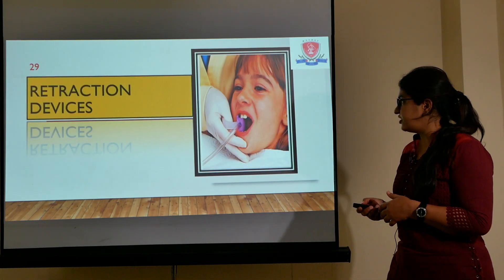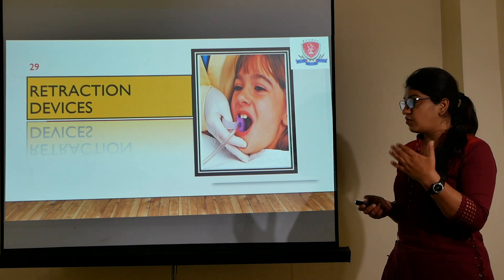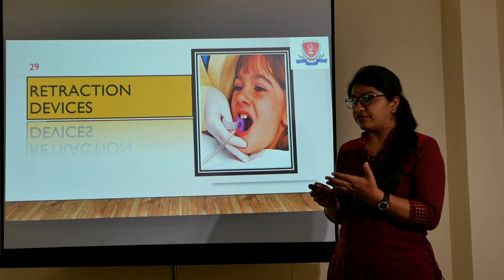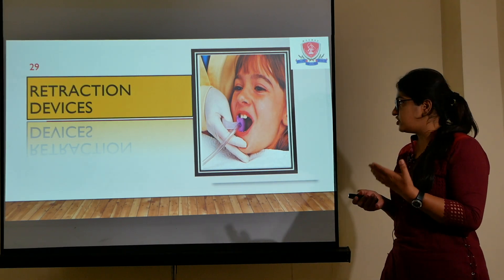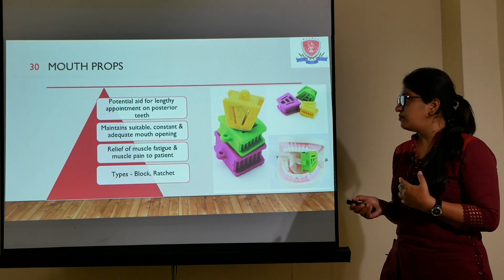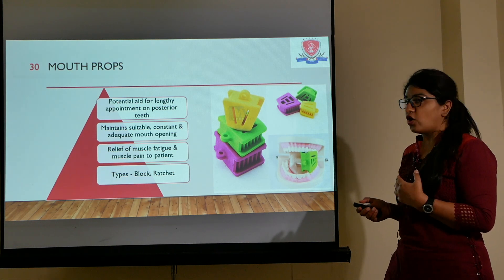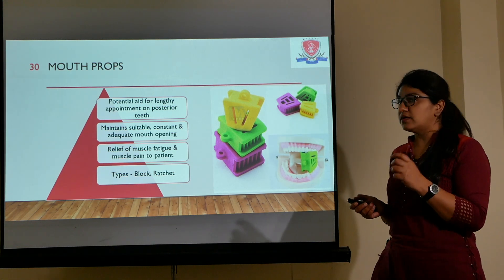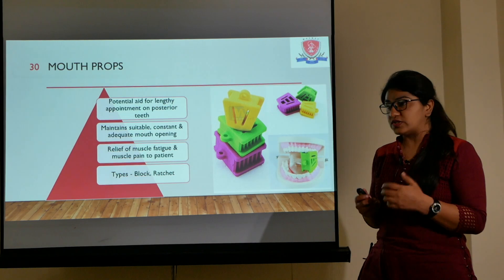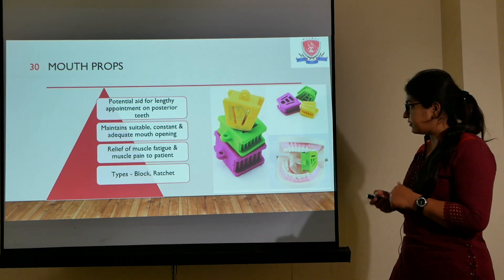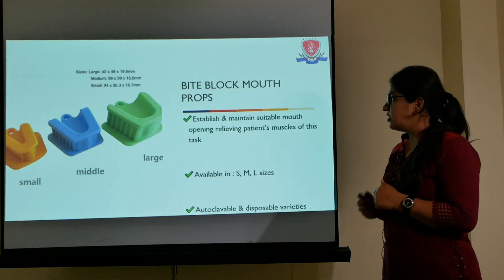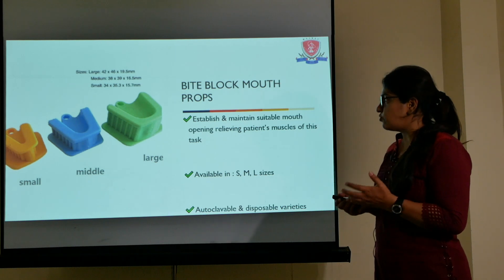Coming to the retraction devices — moisture control has been done, now we have to retract the tissues because they also cause hindrance. The tongue, lips, and cheeks all have to be retracted. The most commonly used devices are mouth props, mainly used for lengthy appointments or patients who have difficulty keeping their mouth open for a longer duration. They help in prevention of muscle fatigue, making it comfortable for both patient and operator. They are available in small, medium, and large sizes depending on the patient's mouth opening.